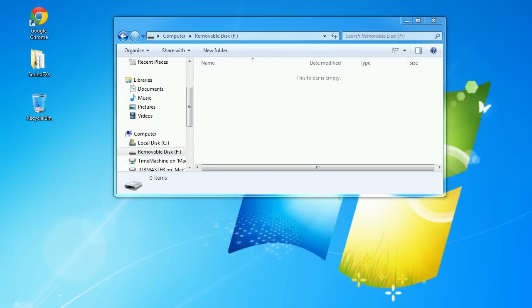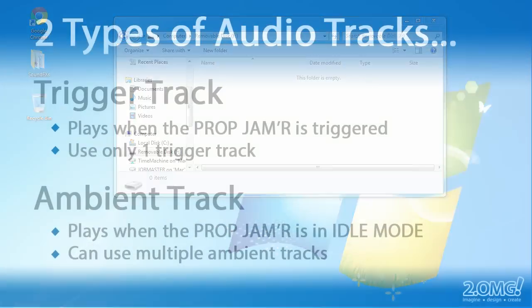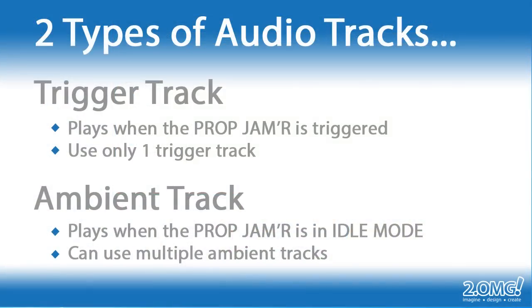Before we get started copying audio tracks to the micro SD card, I want to quickly describe how the Prop Jammer uses these audio tracks. There are basically two different types: the trigger track and the ambient track. The trigger track is played when the Prop Jammer receives a trigger signal or you press the trigger button on the board. The ambient track is like the background track — it plays in a loop while the Prop Jammer is in idle mode waiting for a trigger event.